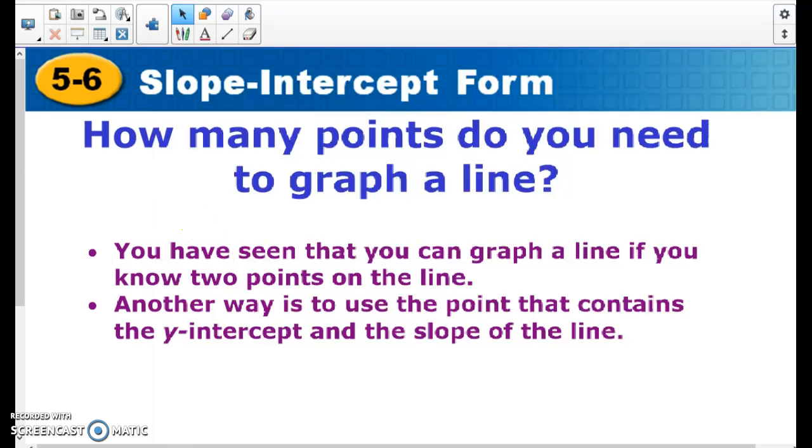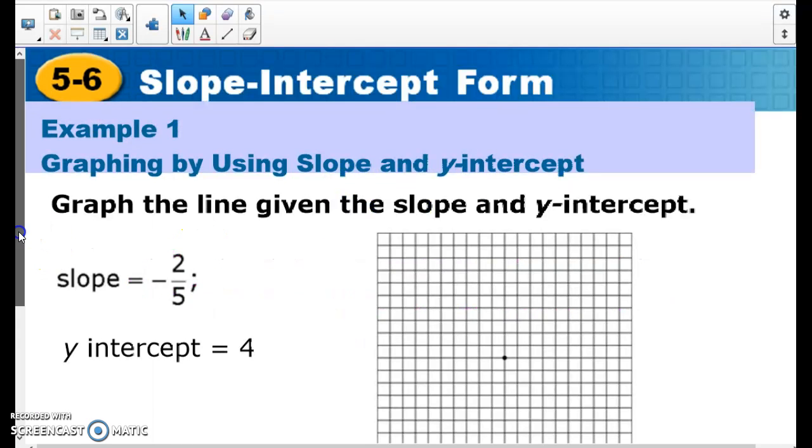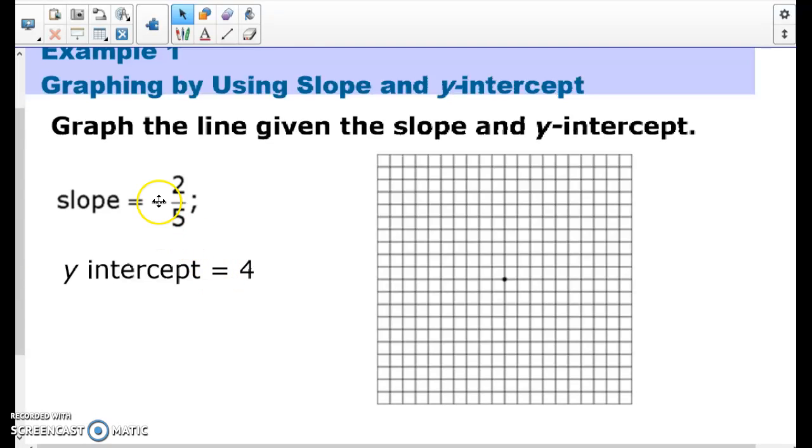So our big part of today is graphing when we know the intercept and we know the slope. For example, here's our graph right here. We're kind of having our line right down the middle, so that's our 0, 0 there. If my y-intercept is going to be 4, that means I'm going to have a dot that is up 4. It's always on the y-line. If it's positive, it's going to be up. If it's negative, it's going to be down. So this one is up 4. And my slope is negative 2/5.